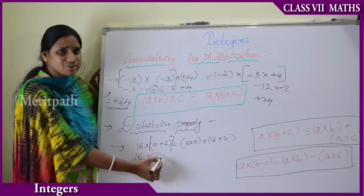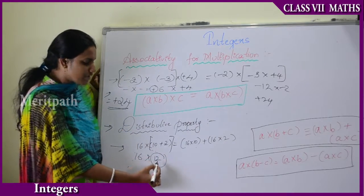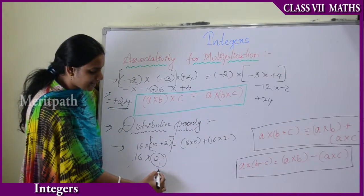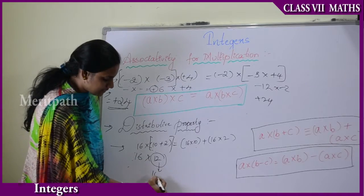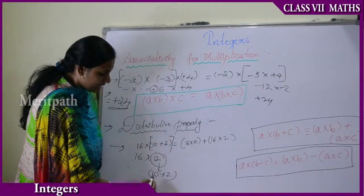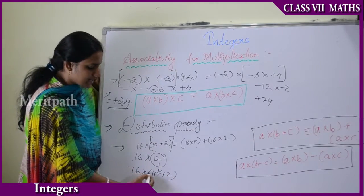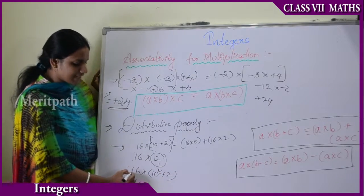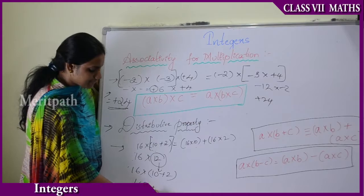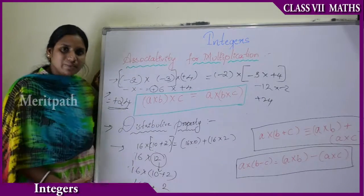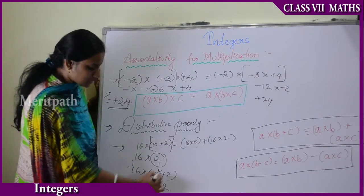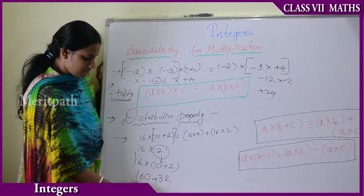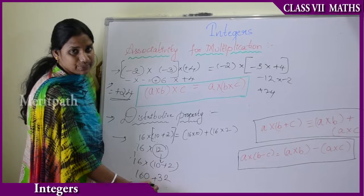In order to multiply 16 into 12, we split 12 into 10 plus 2. So 16 into 10 equals 160. And 16 into 2 equals 32. Therefore 160 plus 32 equals 192.